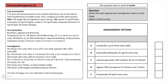Her ABG shows a low oxygen level but a normal carbon dioxide level, pH and bicarbonate. Her ECG shows sinus rhythm. Cardiomegaly and bilateral pleural effusion are visible on her chest X-ray. She has already been given oxygen, so the question is asking you about the most appropriate management option at this stage.